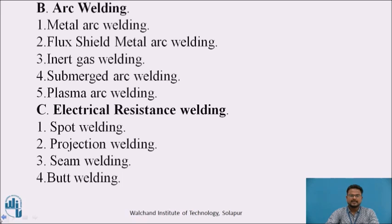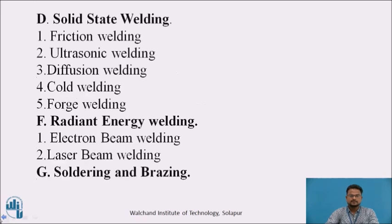The third type is electrical resistance welding. Under that, the subtypes are: spot welding, projection welding, seam welding, and butt welding. Coming to solid state welding, the subtypes are: friction welding, ultrasonic welding, diffusion welding, cold welding, and forge welding.